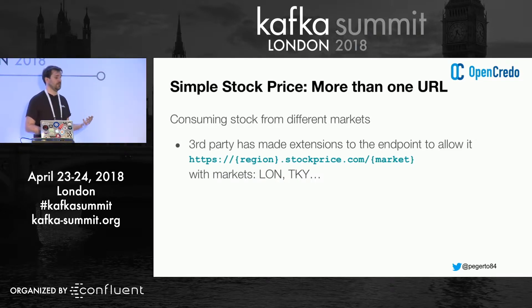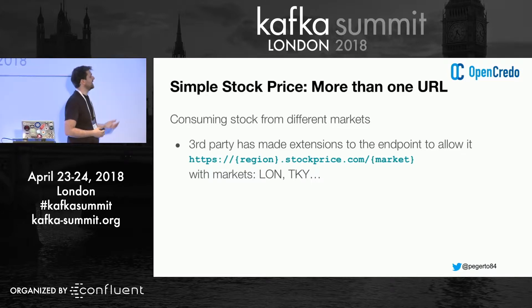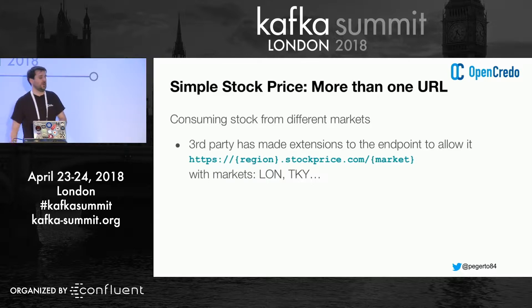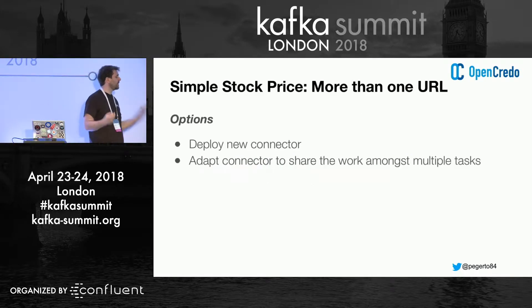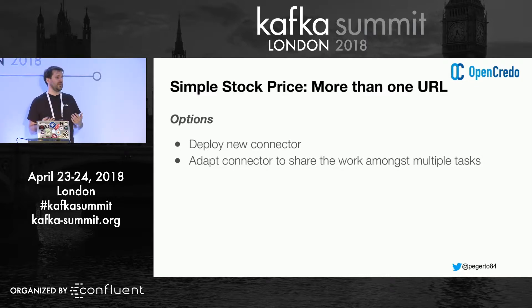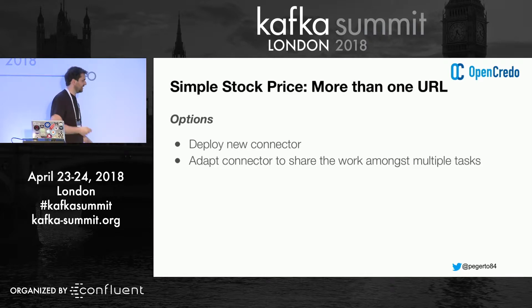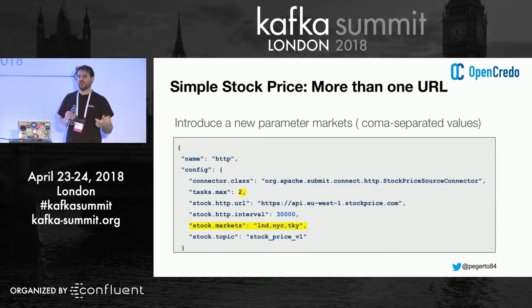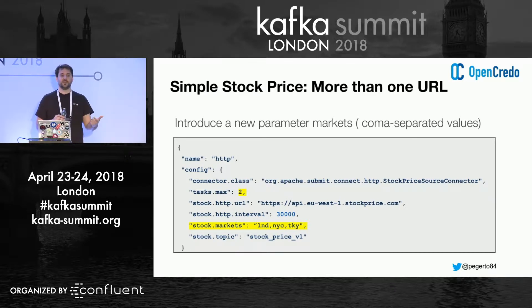The first concern is: we might have more than one URL. In the stock price example, when we query a specific URL we might get the stock listing for a specific market, but there are more than one markets available. There may be use cases where we need to query two or three markets. One option is to deploy a new connector instance — but then we need to monitor more than one connector, and if there are ten markets that's ten connectors to monitor, which gets messy. So we need to adapt our connector to work across multiple tasks. We introduce a new configuration parameter for markets and increase the number of tasks.